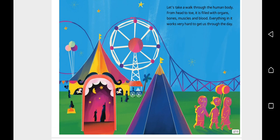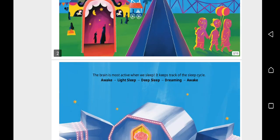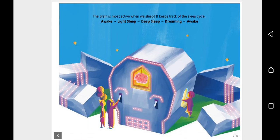Let's take a walk through the human body from head to toe. It is filled with organs, bones, muscles, and blood. Everything in it works very hard to get us through the day. The brain is most active when we sleep. It keeps track of the sleep cycle: awake, light sleep, deep sleep, dreaming, awake.